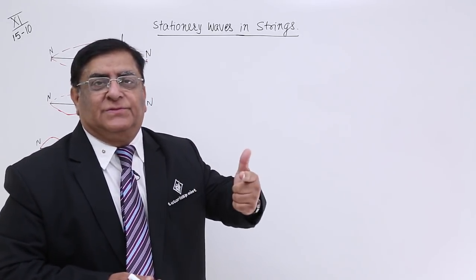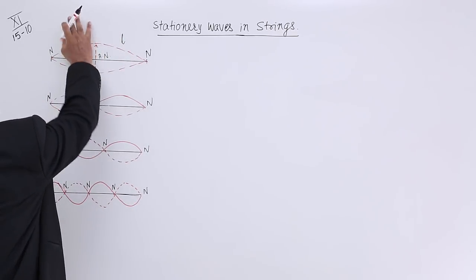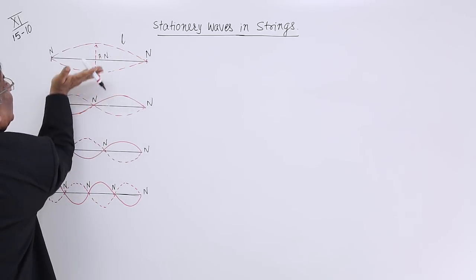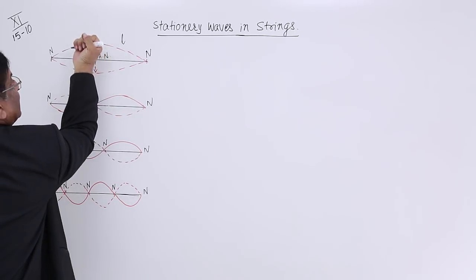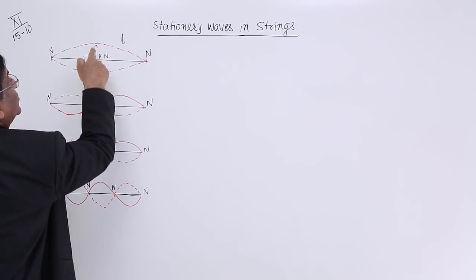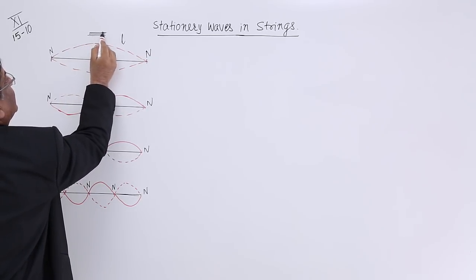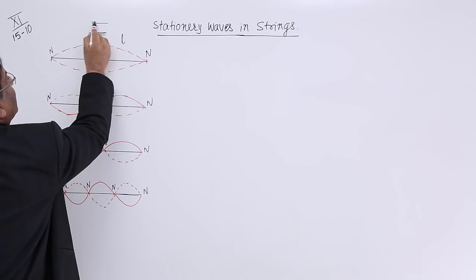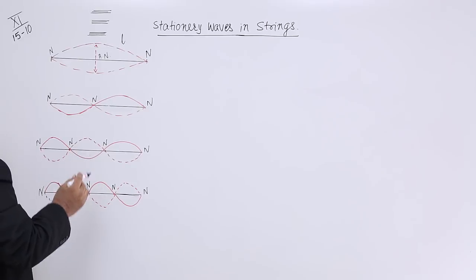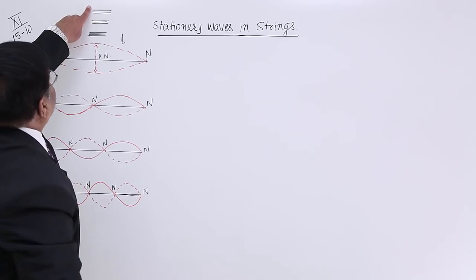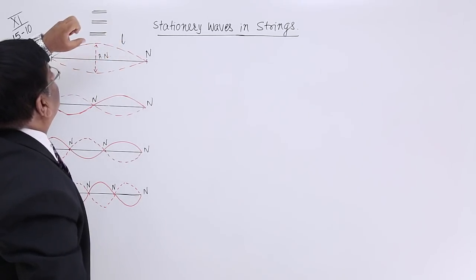From where does that sound come? If this is the vibrating string and here is the air — when it goes up, the air is compressed, and when the string comes back, the air is pulled back. Again it goes there, the air is compressed. So what we get here are compressions and rarefactions alternating. This is the formation of a sound wave, and this sound wave comes to our ear.